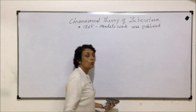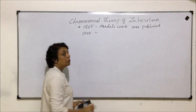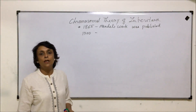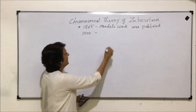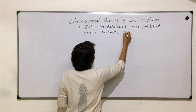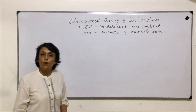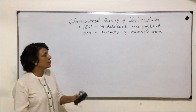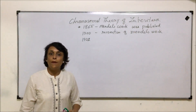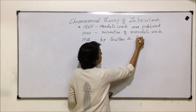But this work went unrecognized for quite some time. In 1900, three scientists — we have talked about their contribution also — actually read Mendel's work, and that's when it was recognized. And in 1902, the Chromosomal Theory of Inheritance was given by Sutton and Boveri.